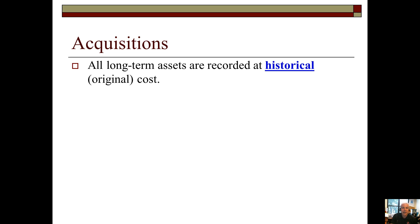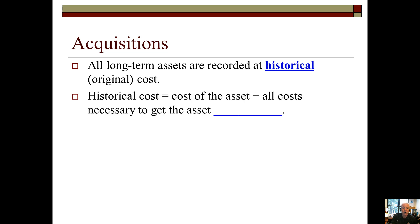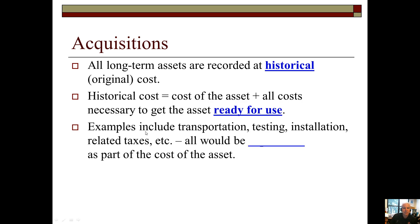Under US GAAP, all long-term assets are recorded at historical cost — also called original cost. Historical cost equals the cost of the asset plus all costs necessary to acquire the asset and get it ready for its intended use. Examples include transportation costs to bring equipment from Japan to your facility, testing machinery before production, installation, setup, and related taxes — all capitalized as part of the asset cost.